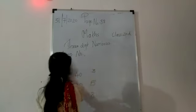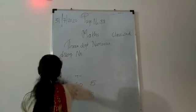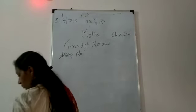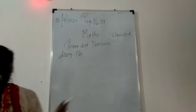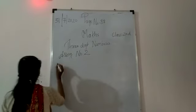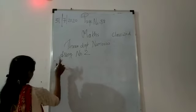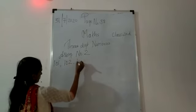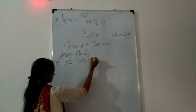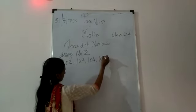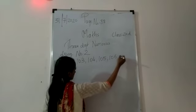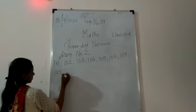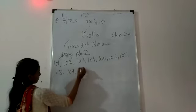In assignment number 2 you are supposed to write the numbers from 101 to 200 — they are the missing numbers. So I will do one for you: 101, 102, 103, 104, 105, 106, 107, 108, 109, 110.